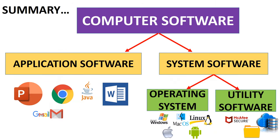Now let's see the summary of what we have learned. Computer software is a set of instructions that guides the computer hardware. Computer software is divided into application software and system software. Application software are programs that help the user perform specific tasks. System software is a set of programs that controls the computer hardware. System software provides the platform for running the application software. System software is divided into operating system software and utility software.